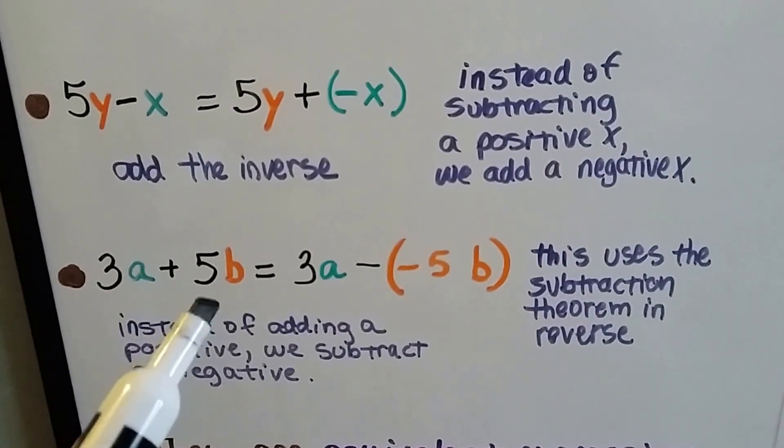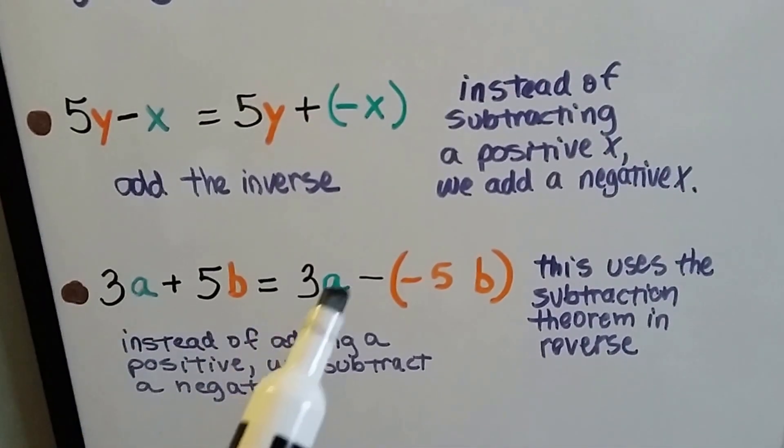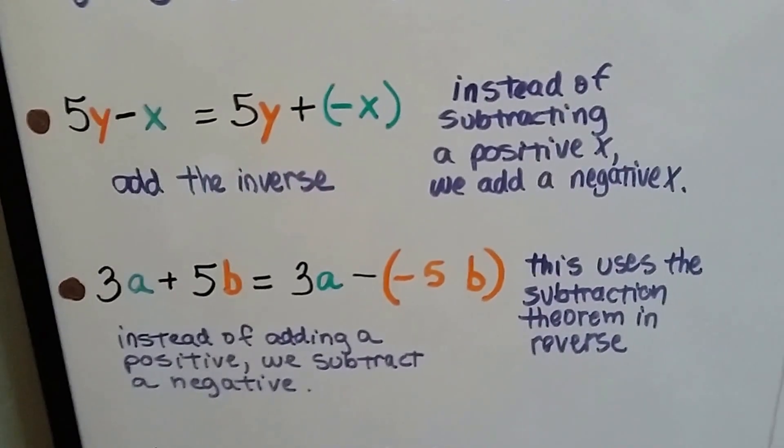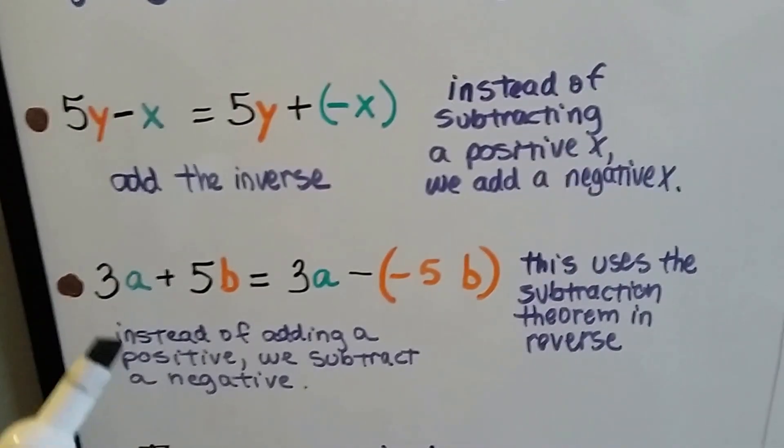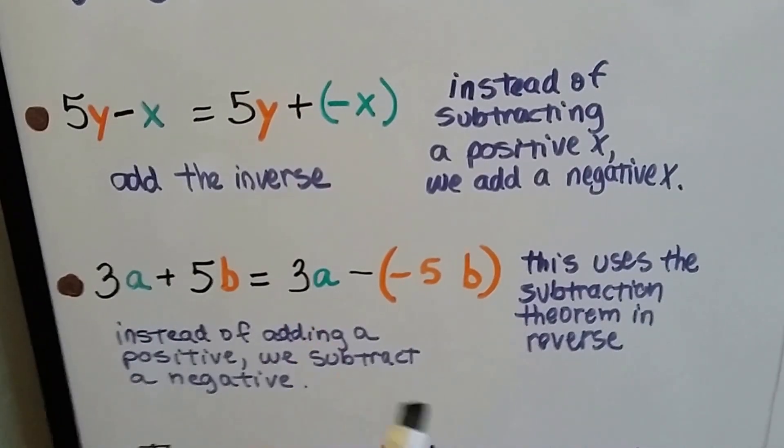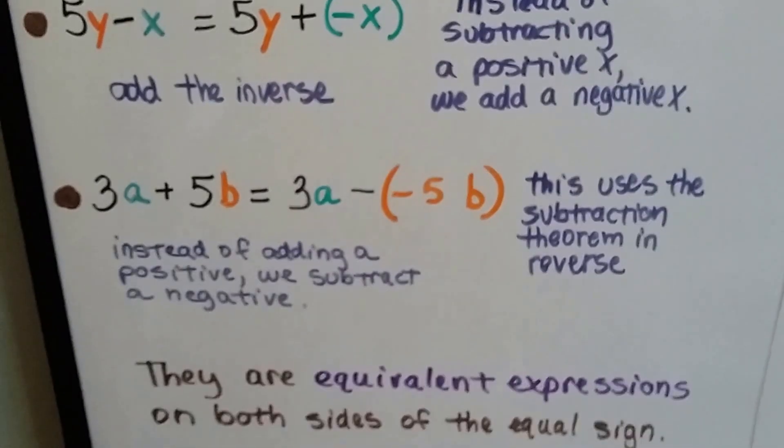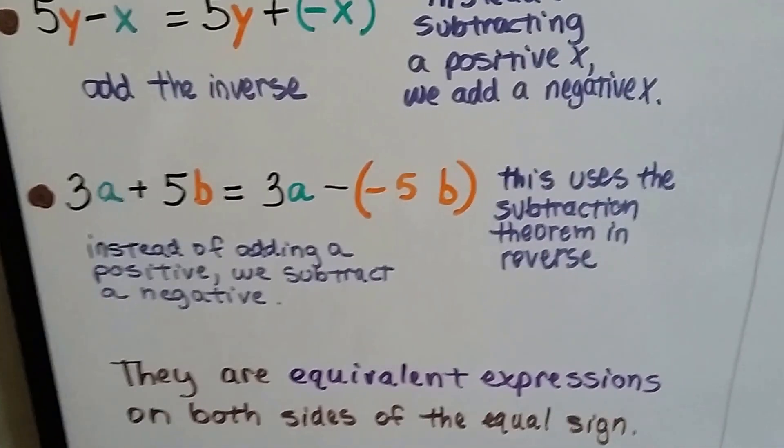For 3a plus 5b, it's the same thing as 3a minus a negative 5b. This uses the subtraction theorem in reverse. Instead of adding a positive 5b, we subtract a negative because these two negatives make a positive. They're equivalent expressions on both sides of the equal sign.